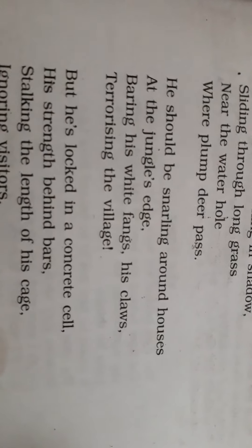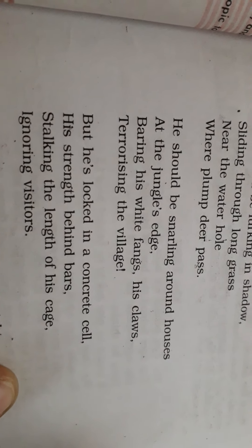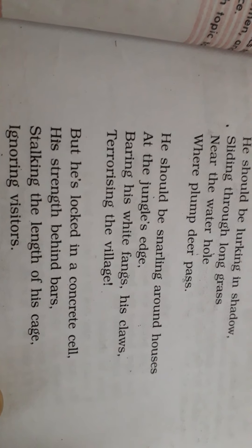Third stanza: he should be snarling around houses at the jungle's edge, wearing his white fangs, his claws terrorizing the village. It means the tiger, if in the forest, must be terrorizing the people who live at the jungle's edge. He will be near the houses built at the jungle's edge, and there, with his white fangs and his claws, he will terrorize the people. So the question can be: why do you think he should be snarling around houses?